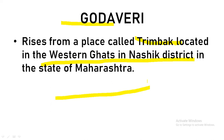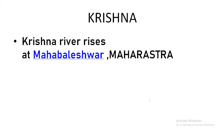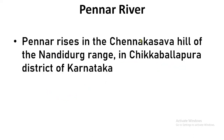Next, Pennar river rises in Chennakesava Hill of Nandhi Durga range in Chikkaballapur district of Karnataka. Palar river rises in Nandhi Hills of Karnataka, also in Chikkaballapur district. Ponnayar also originates in Nandhi Hills — so Palar and Ponnayar both originate from Nandhi Hills.